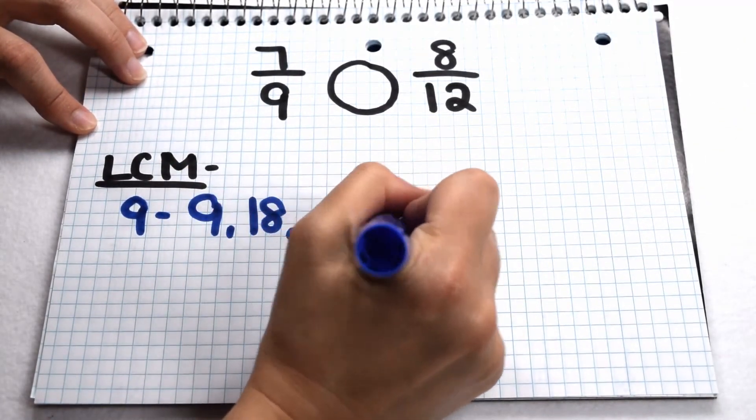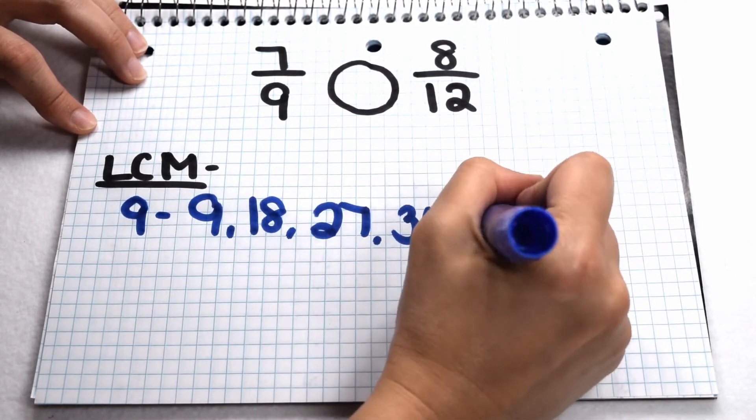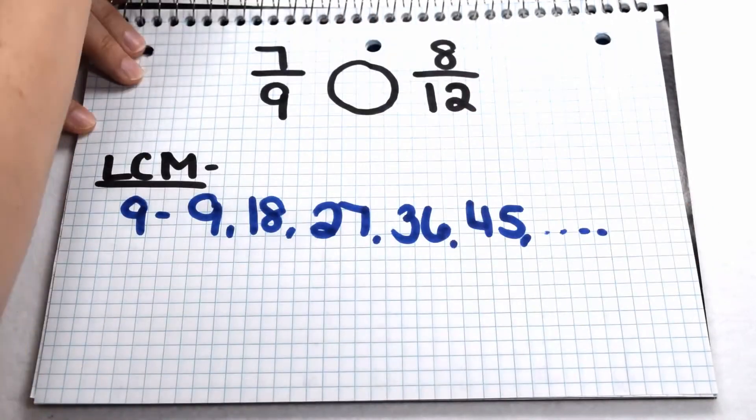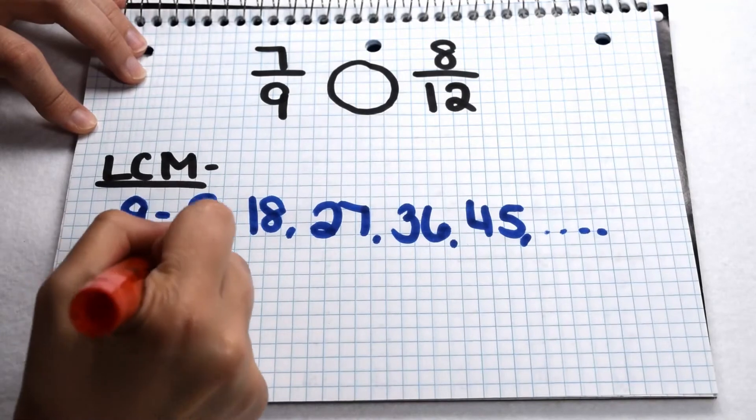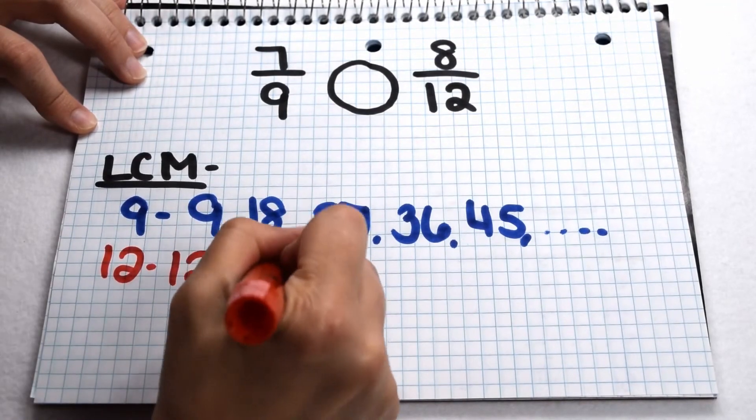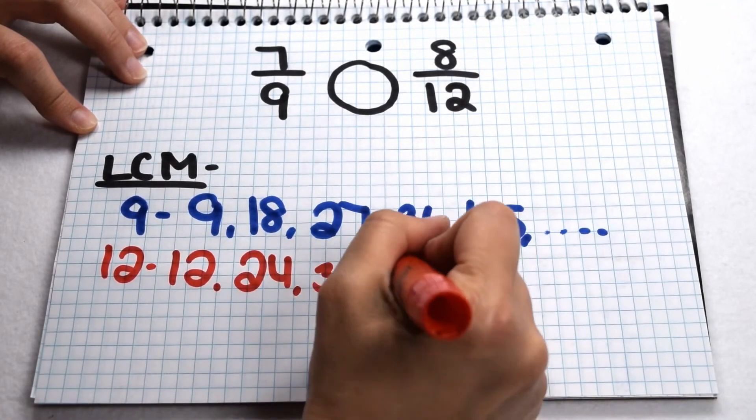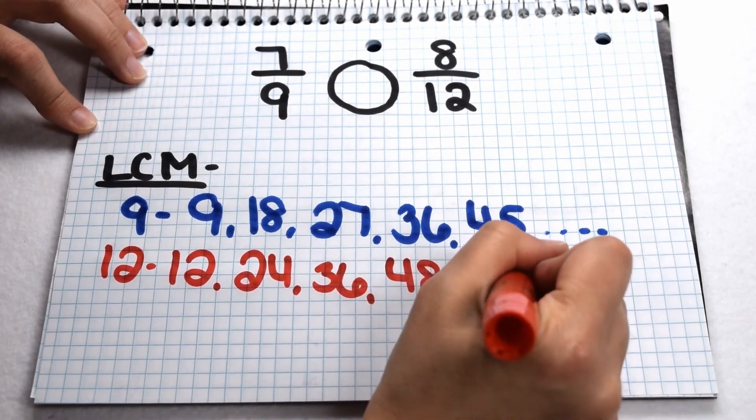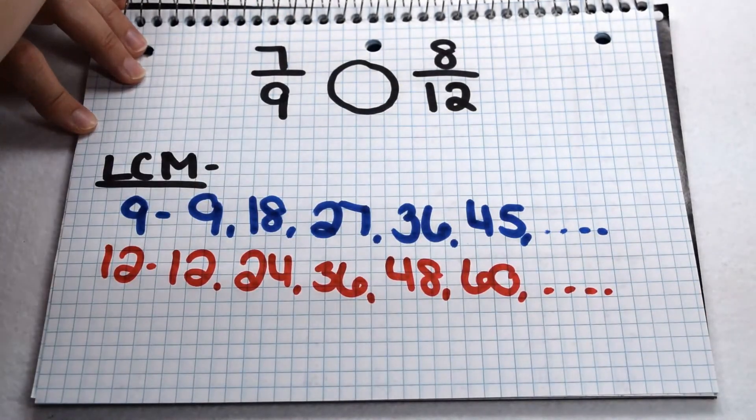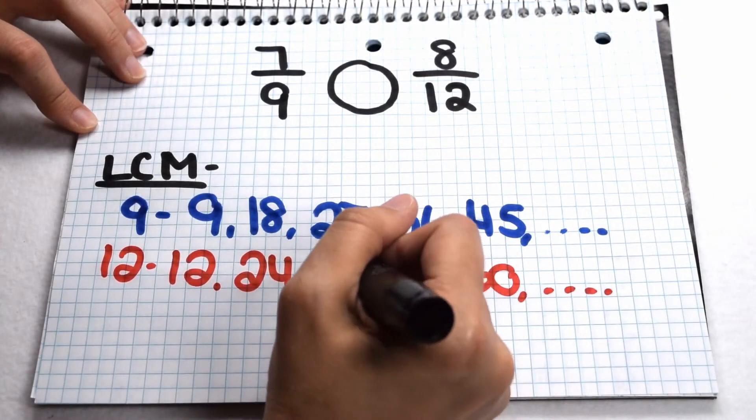Multiples of 9 include 9, 18, 27, 36, 45, and so on. Multiples of 12 include 12, 24, 36, 48, 60, and so on. At this point, we can see we have a common value on our list. The least common multiple of 9 and 12 comes out to be 36.